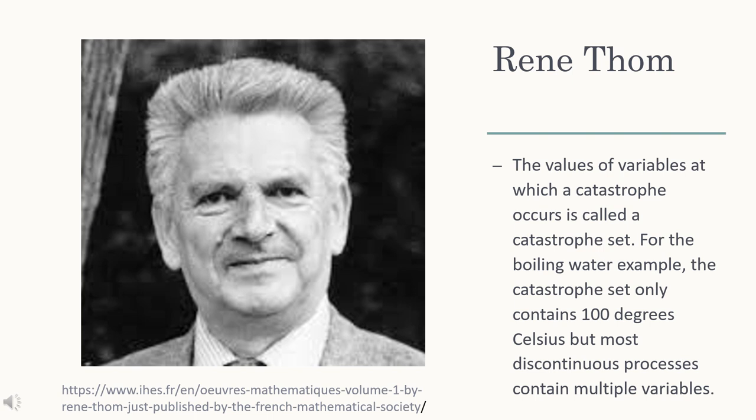The values of variables at which a catastrophe occurs is called the catastrophe set. For the boiling water example, the catastrophe set only contains 100 degrees Celsius. But most discontinuous processes contain multiple variables.